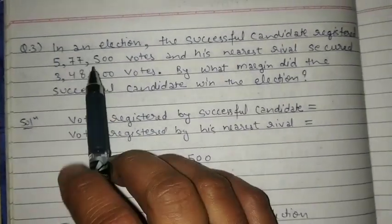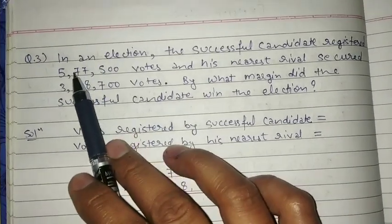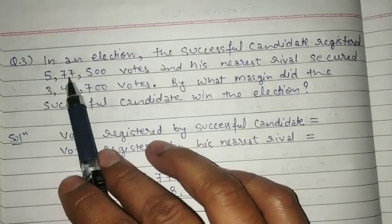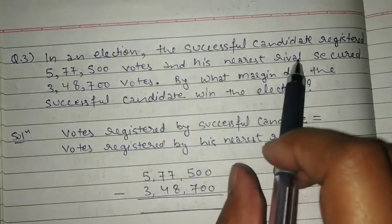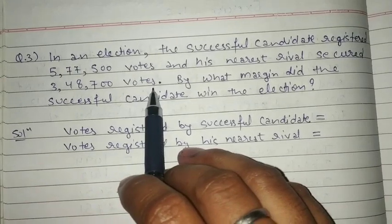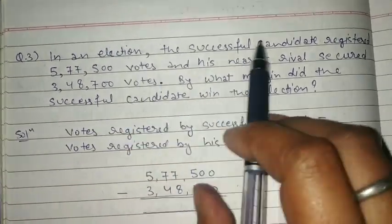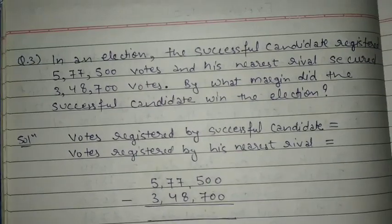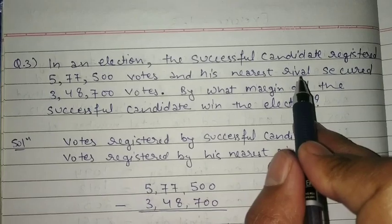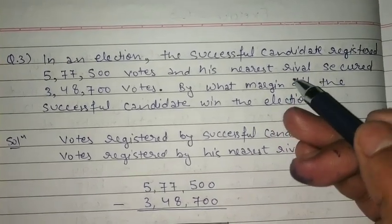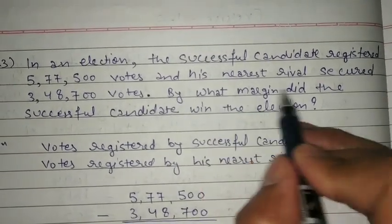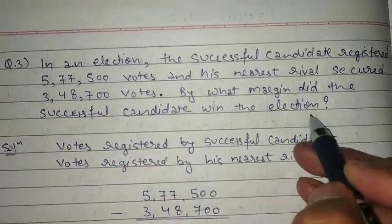Now let's solve the third question. In an election, the successful candidate registered 5,77,500 votes and his nearest rival secured 3,48,700 votes. By what margin did the successful candidate win the election?